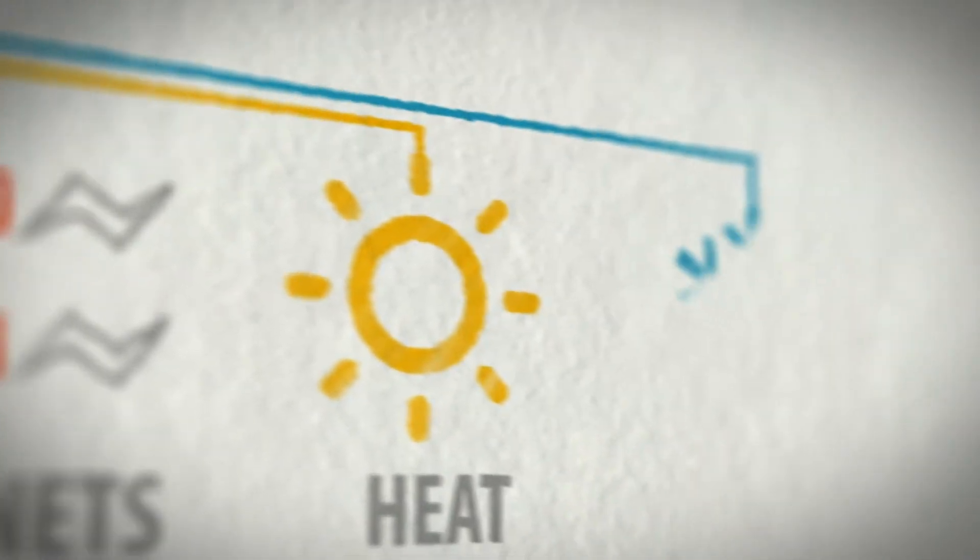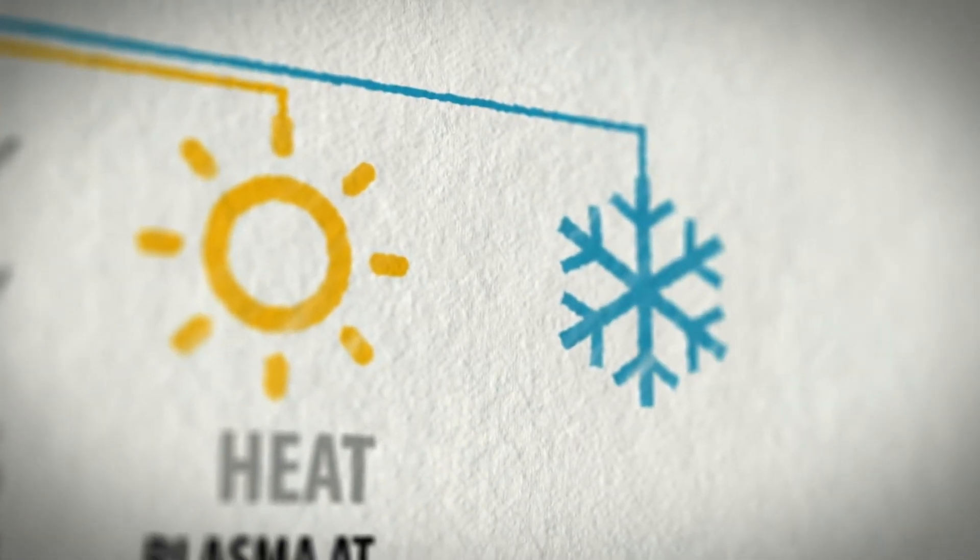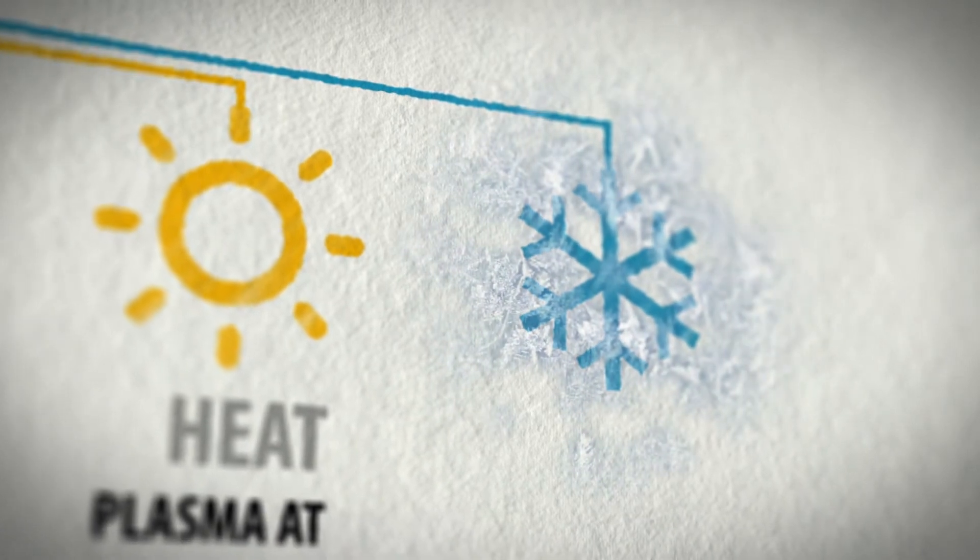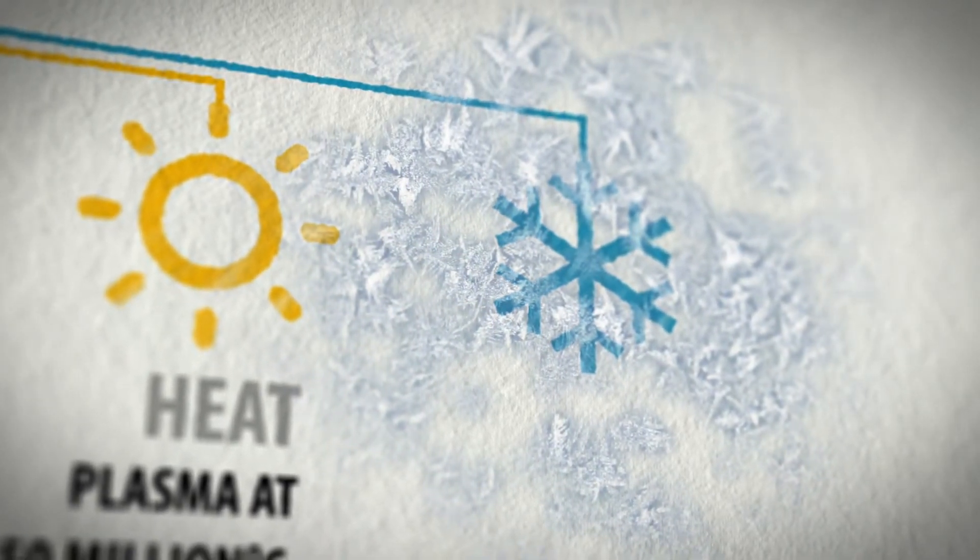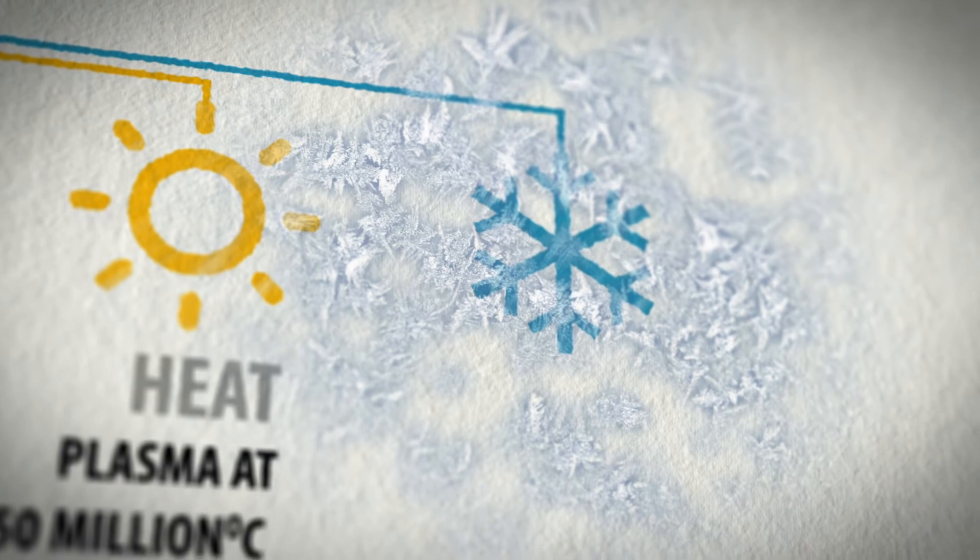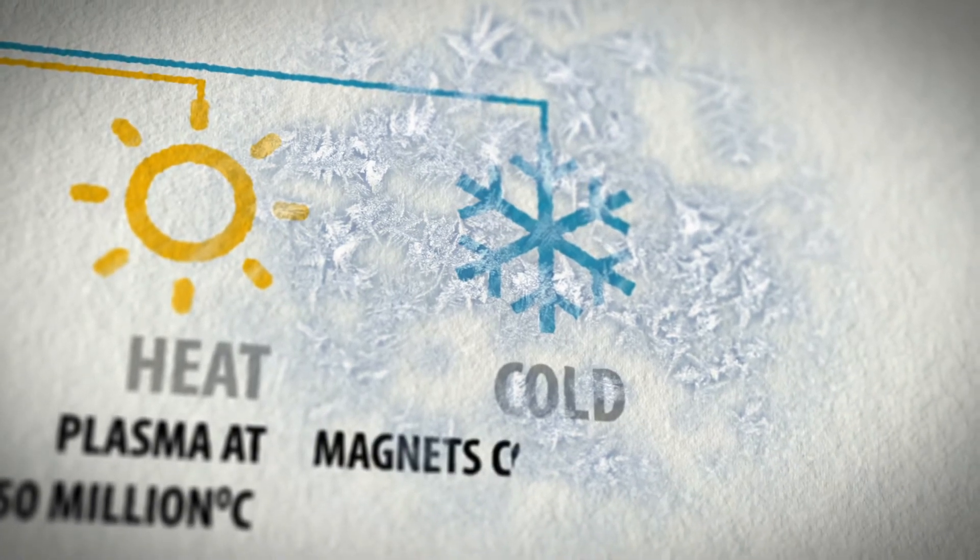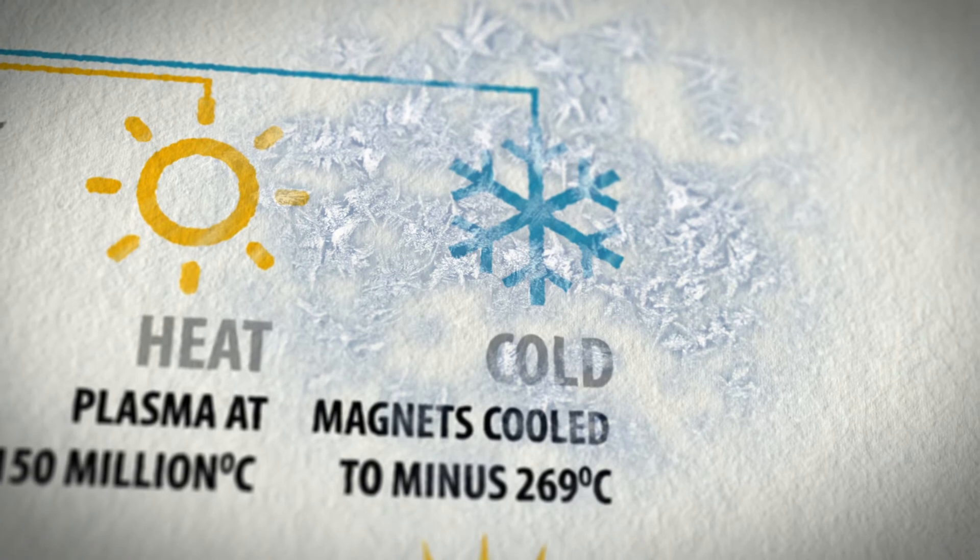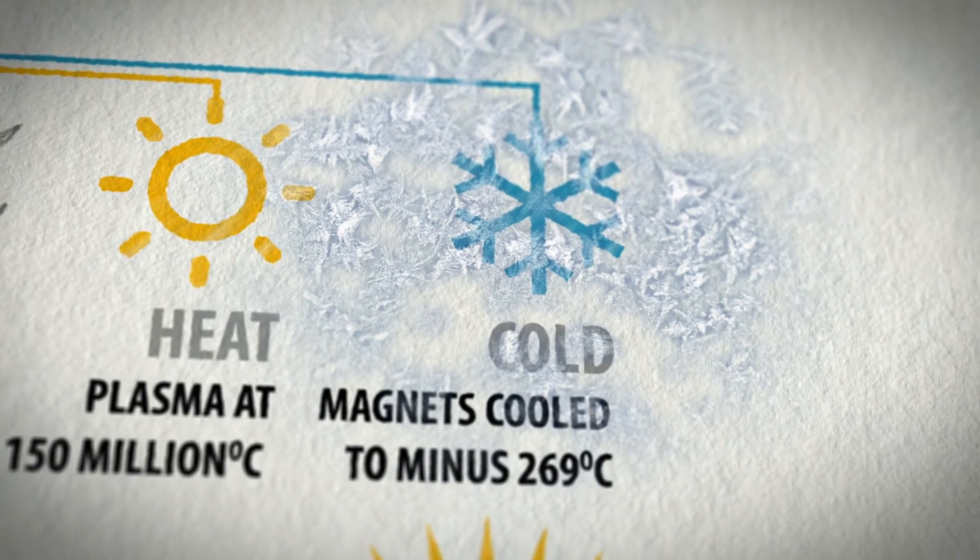Only centimeters away from the fusion furnace, a sophisticated cryogenic and thermal shielding system will guarantee temperatures colder than on the dark side of the Moon, so that the magnets remain superconducting at a comfortable minus 269 degrees Celsius.